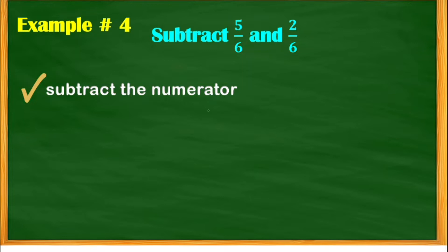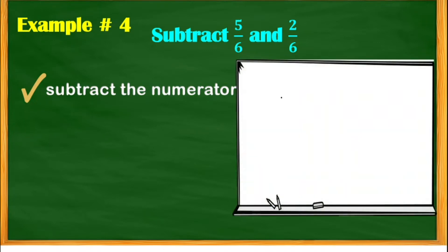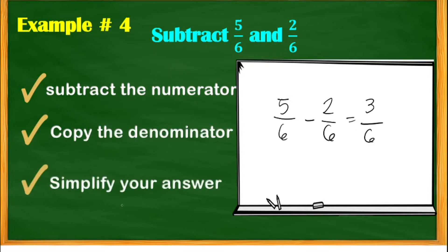Sample number 4: subtract again. 5/6 minus 2/6. Subtract the numerator: 5 minus 2, the answer is 3. Copy the denominator, 6. Simplify your answer — there is a common factor of 3. So, 3 divided by 3 equals 1, and 6 divided by 3 equals 2. The answer is 1/2.